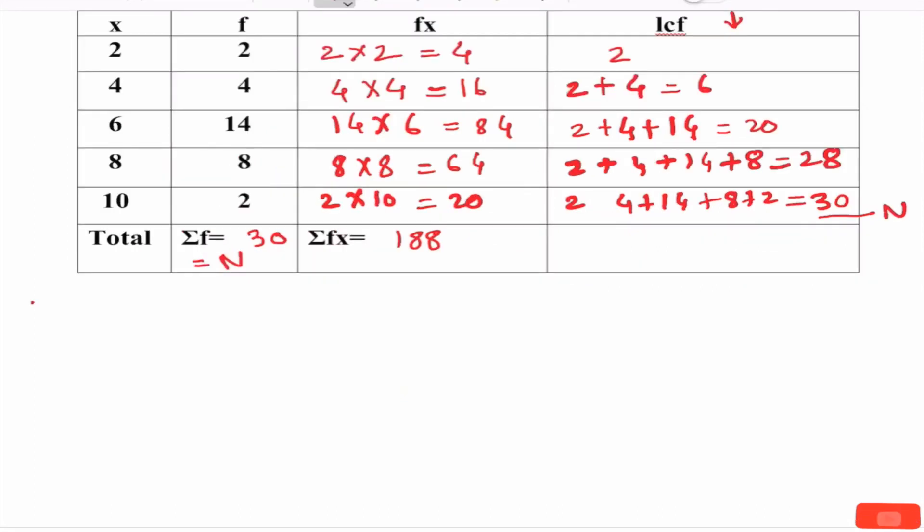Now, we are finding median. Median is also known as 2nd quartile Q2. It is N by 2 observation when the data is arranged in chronological order. Here N is 30, capital N is sum f which is 30 upon 2. That observation corresponding observation, so it is 15th observation.